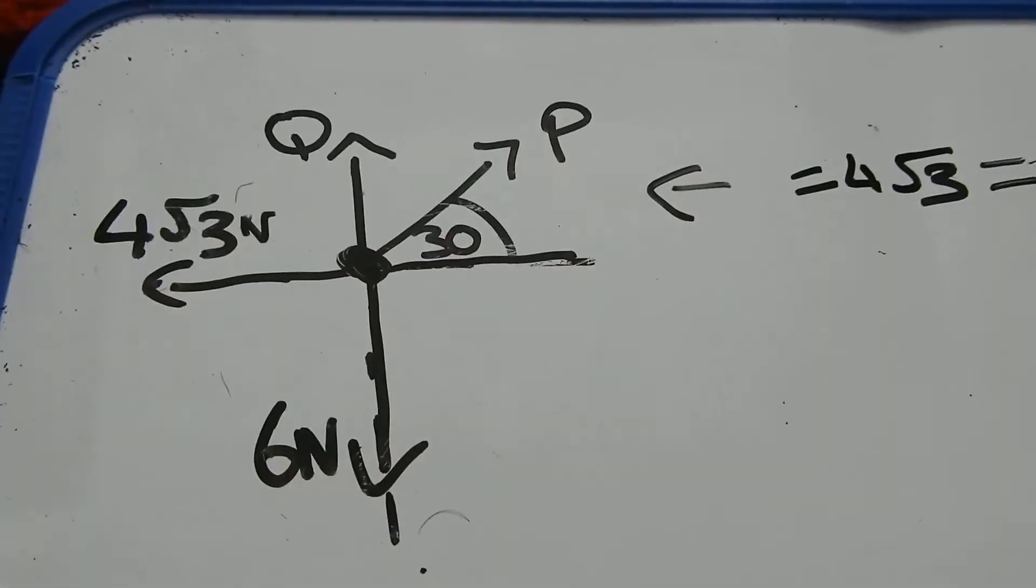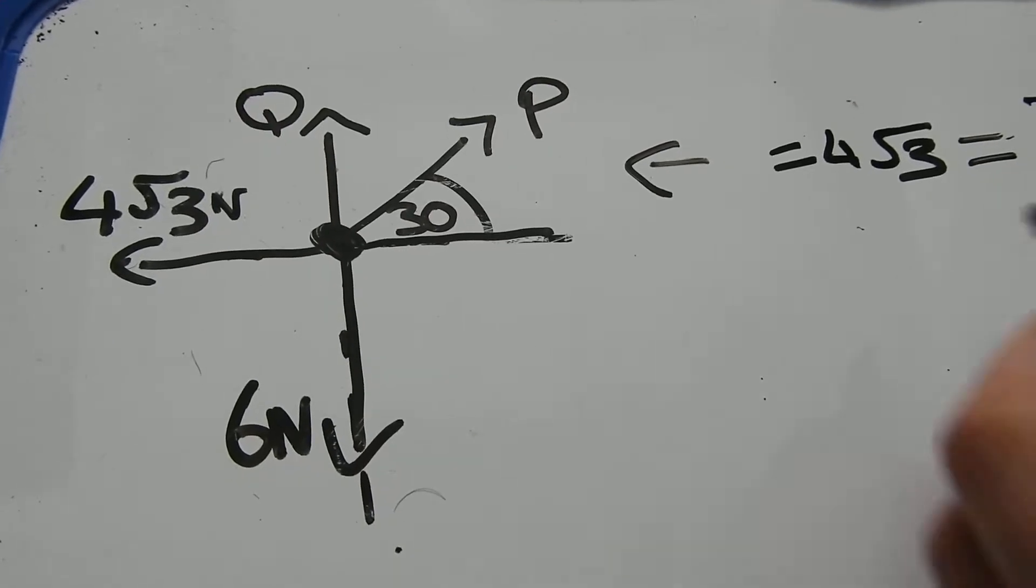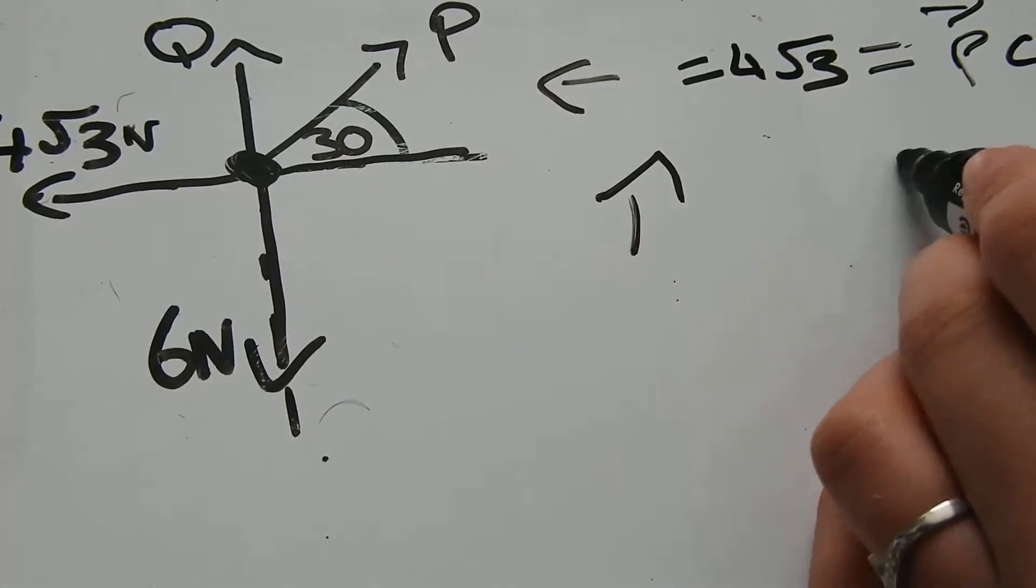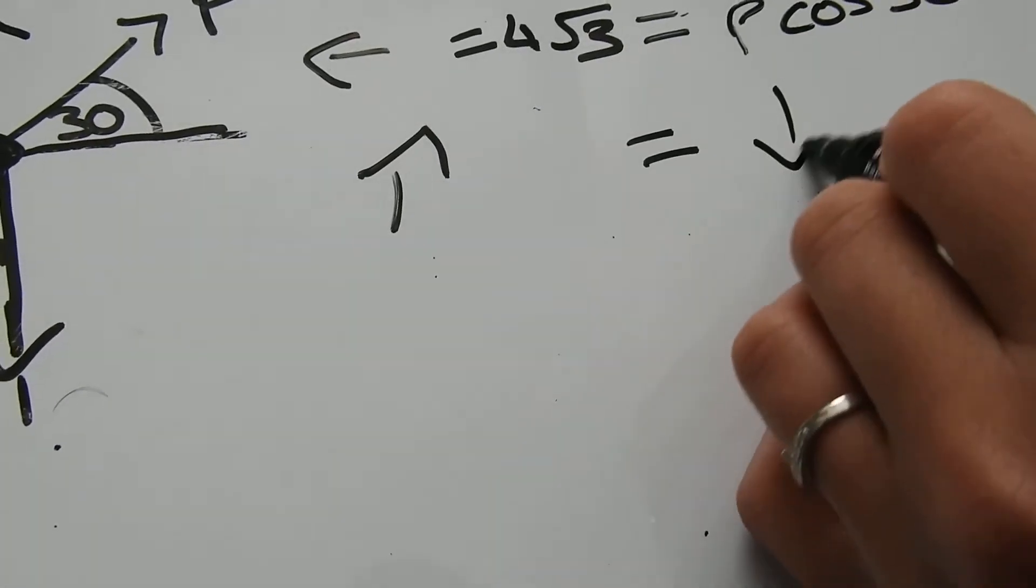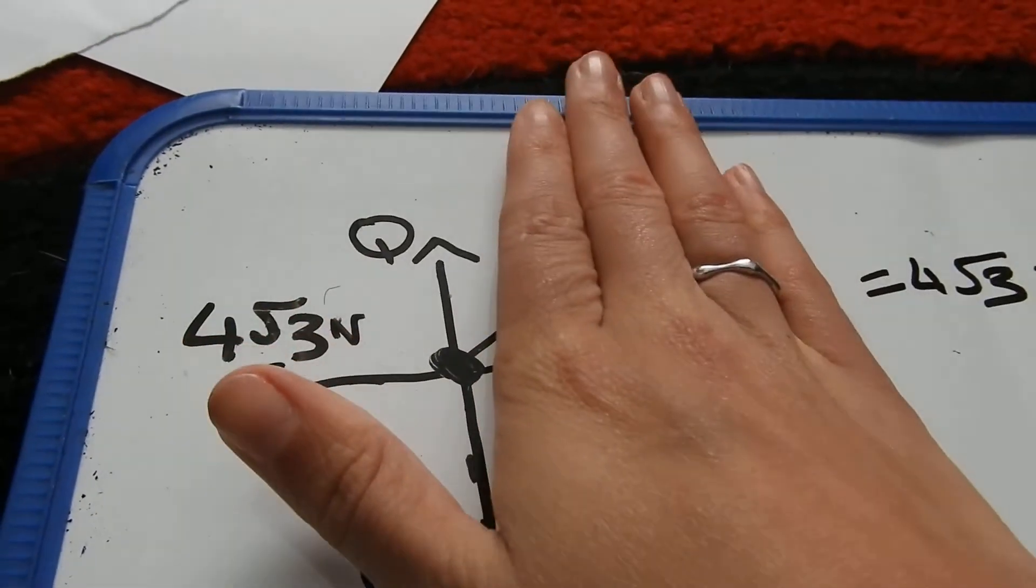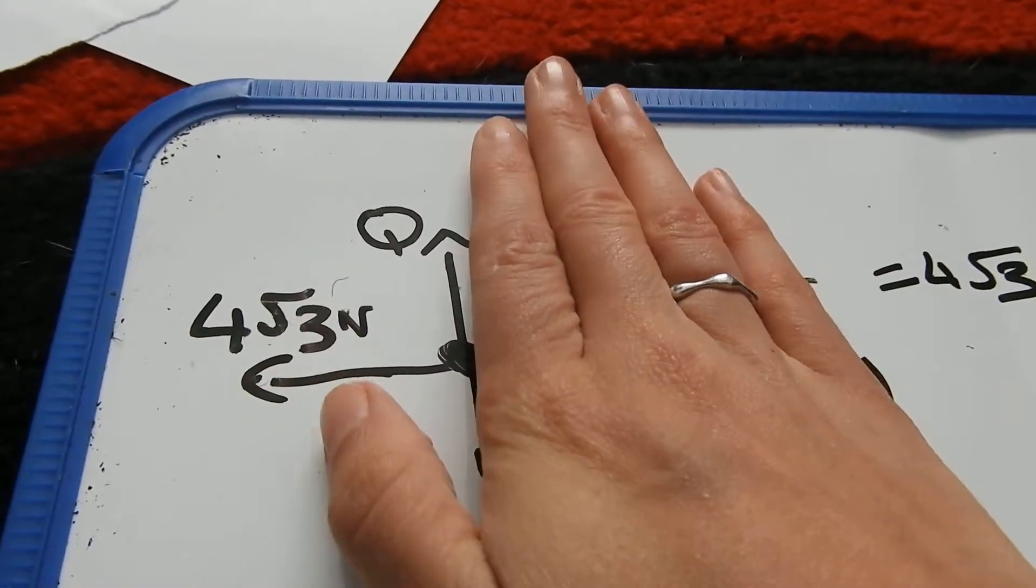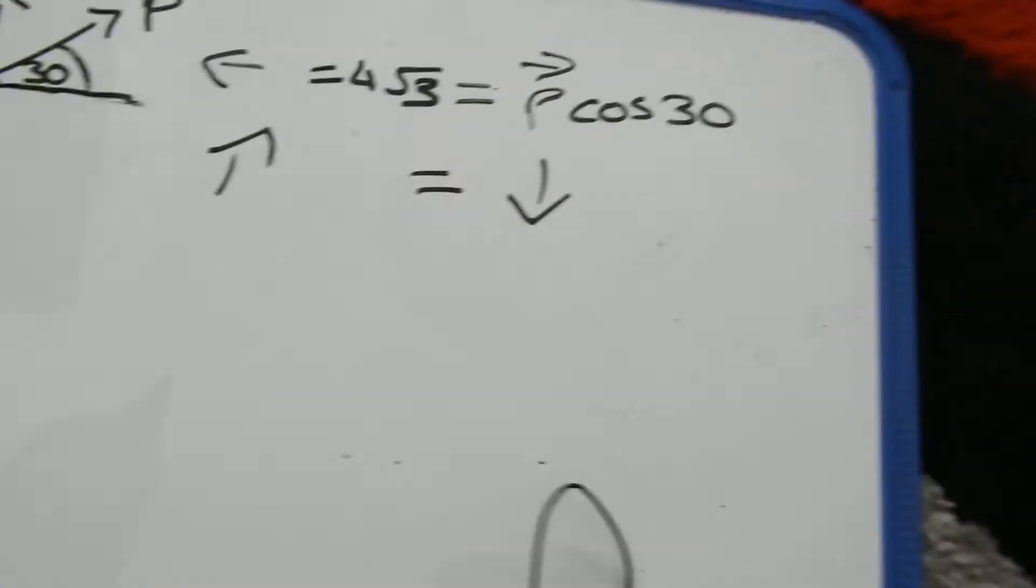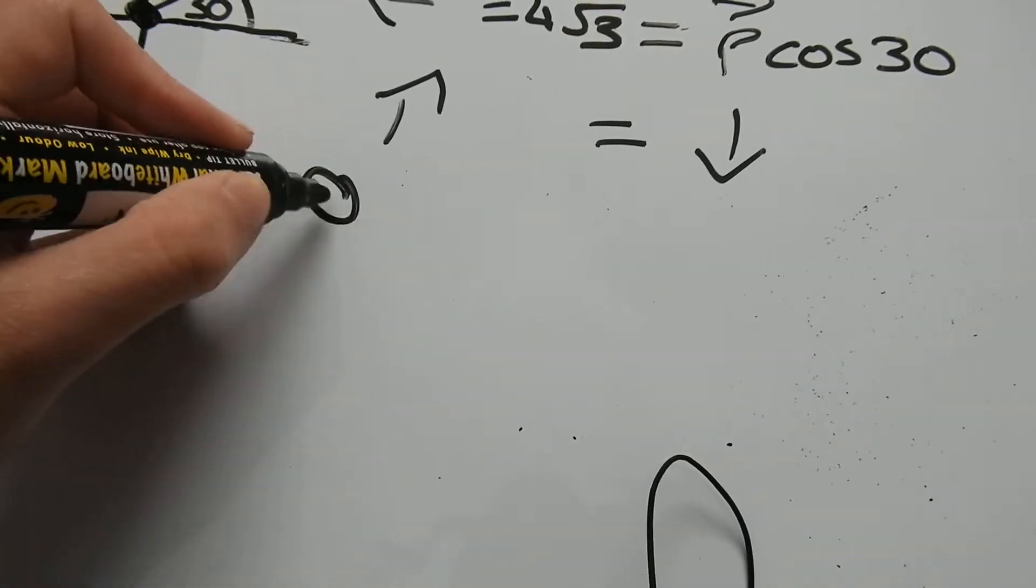Now part B asks for resolving the equations for the vertical. So in that case, as it's an equilibrium, what goes up is going to be equal to what goes down. So again, easiest way to do it is just break it up into different quarters. So if I look at that first one there, we only have Q going up. So I'm going to write Q.